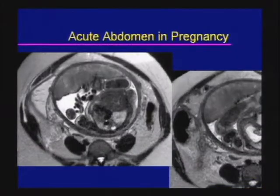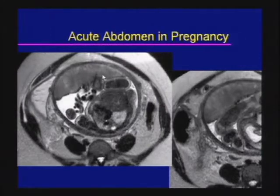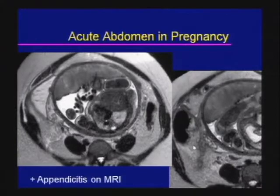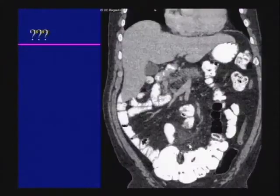This MRI is from a pregnant patient. We see the gravid uterus with the anterior placenta. Note there is obvious right lower quadrant fluid and a dilated, abnormal-appearing appendix. This is acute appendicitis on MRI.